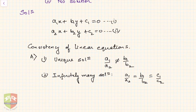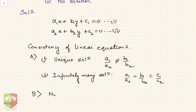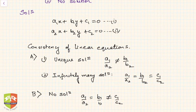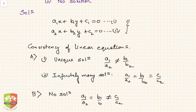For inconsistency — that is, no solution — the condition is a1 by a2 equals b1 by b2, but not equal to c1 by c2. Be careful: in this format, all variables and constants are on the left-hand side and nothing is on the right-hand side except zero.